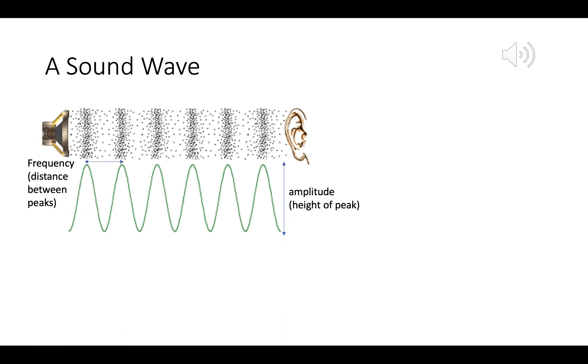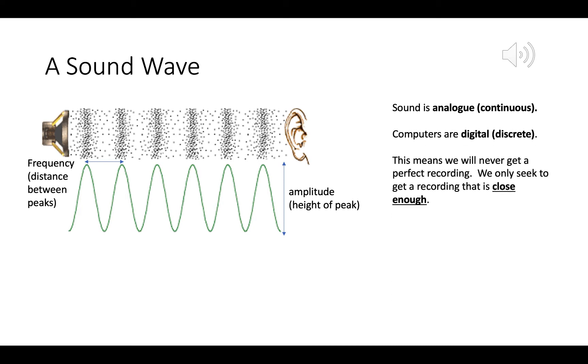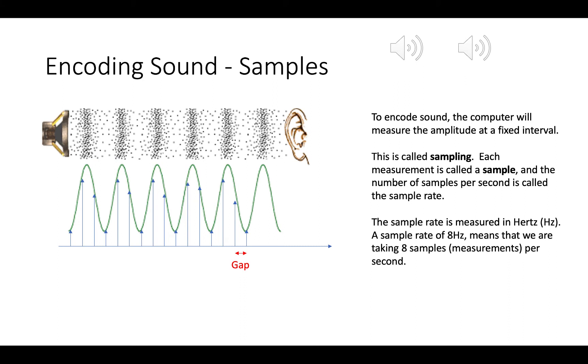Like all waves, it has a frequency, which is the distance between the peaks, and it has an amplitude, which is the height of the peaks. Sound is analogue, which means it's a continuous function. The problem we have is that computers are digital. So whereas sound is a nice smooth curve, computers can only ever record in fixed steps. This means you're never going to get a perfect recording. So all we're seeking to do is to get a recording that is close enough.